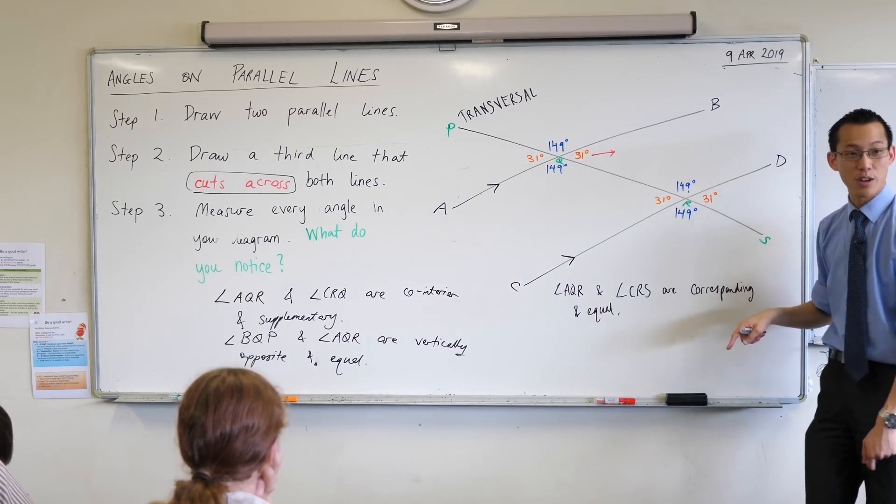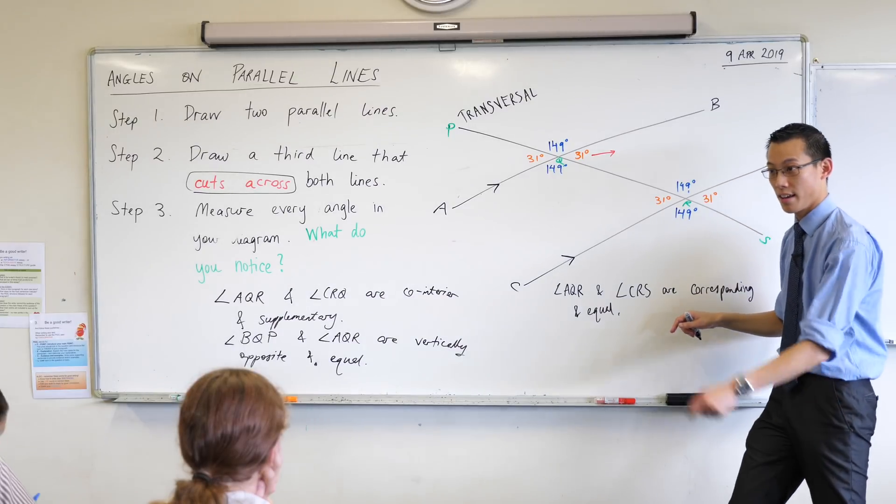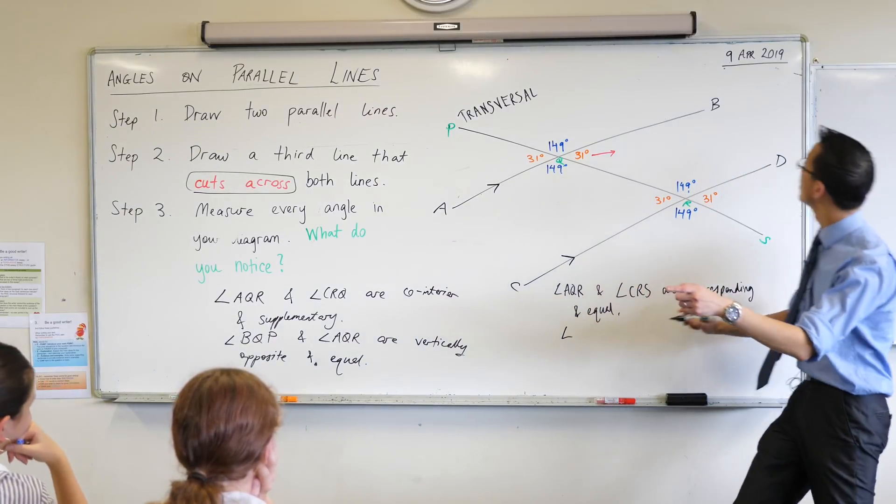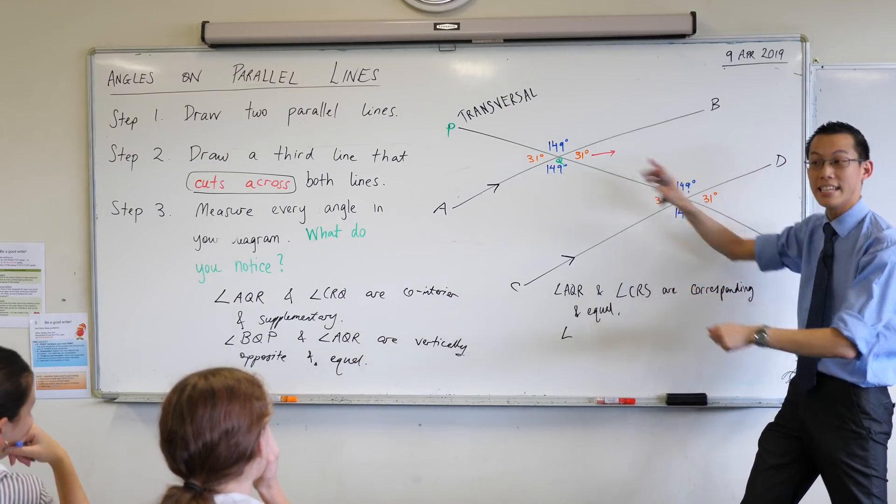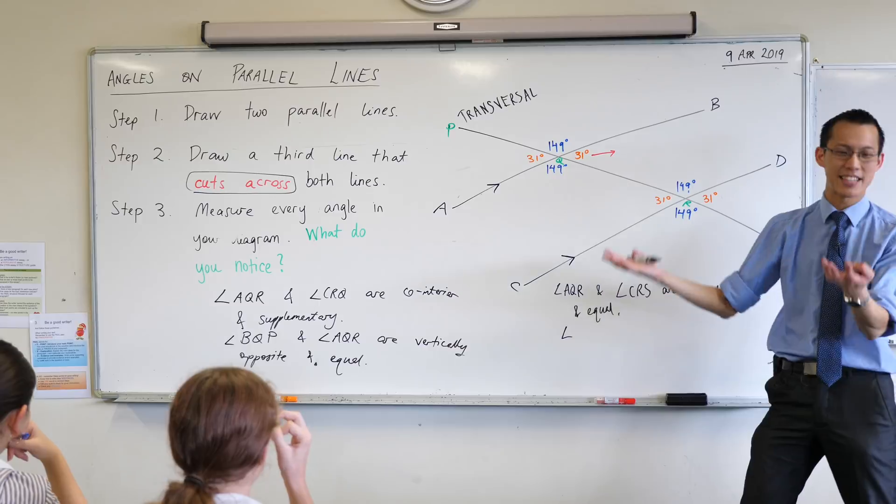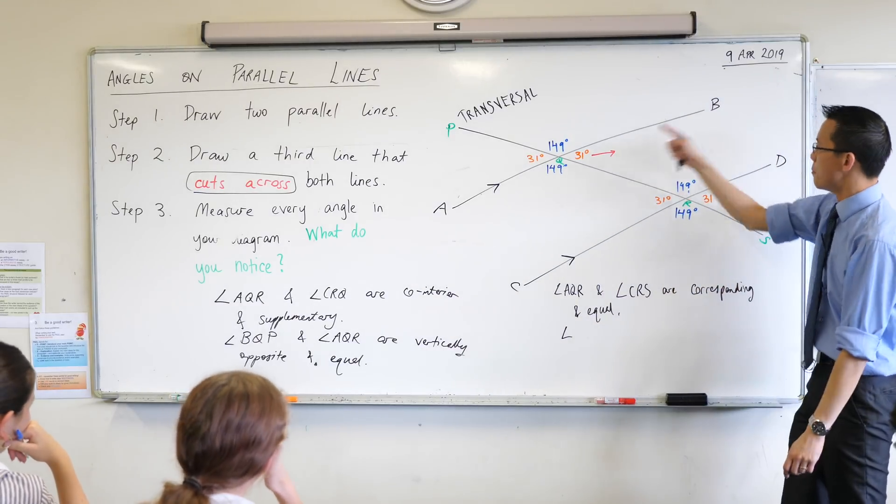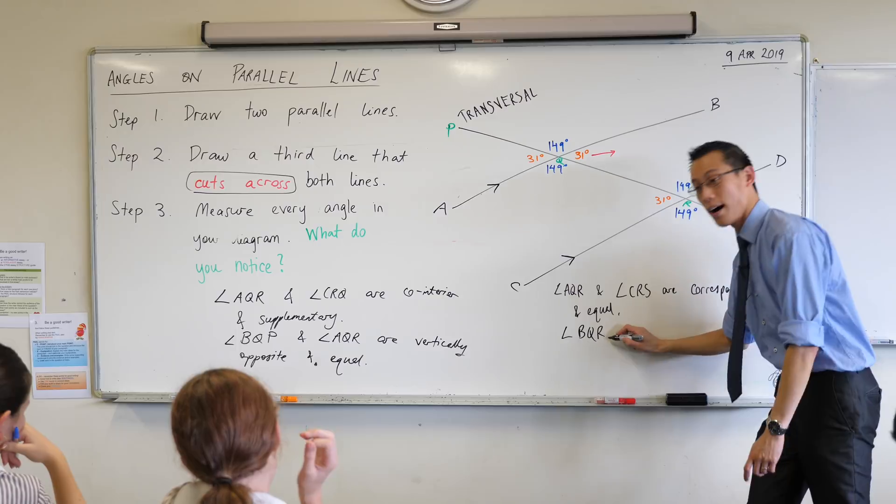31, what's the name of that angle? Can someone name it for me? Yeah, Roshan? Just that one, what's its name? Acute. It is an acute angle, that's the kind of angle it is. BQR. BQR, very good. So write with me BQR.